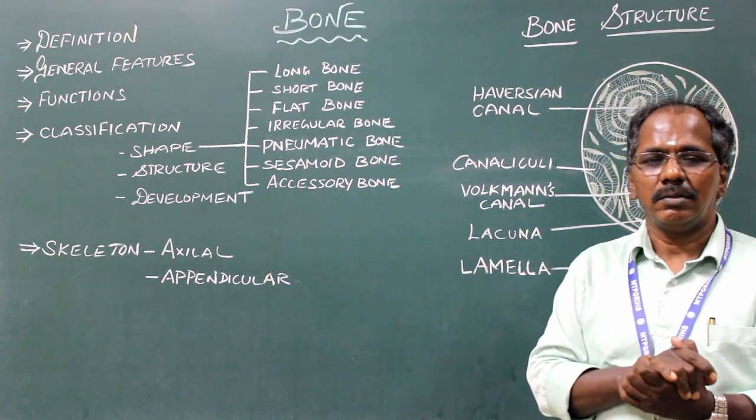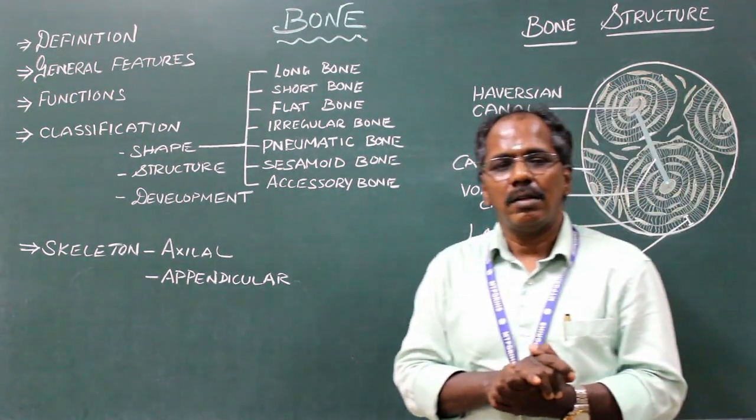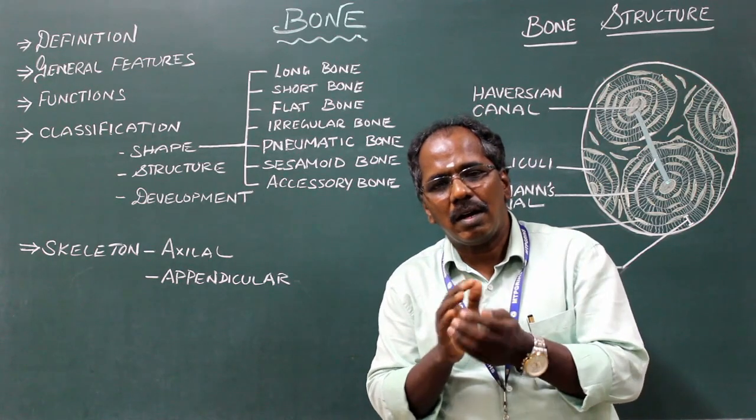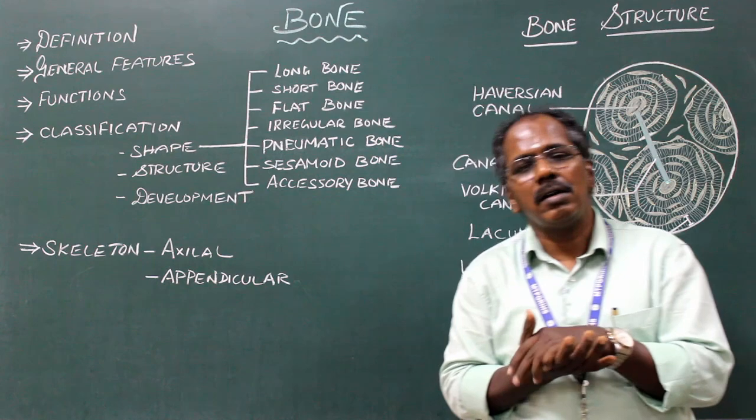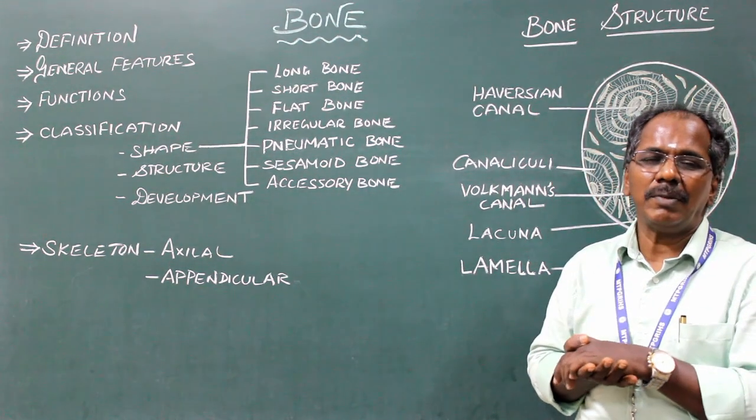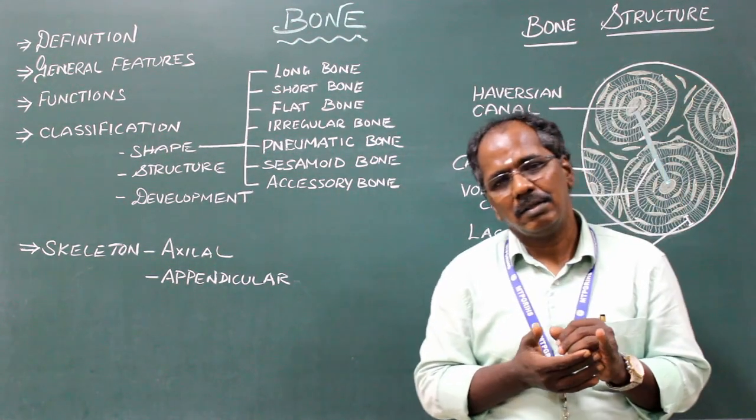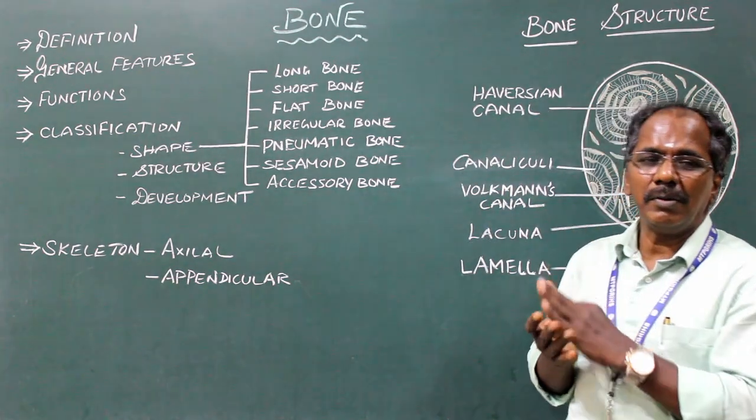Sesamoid bones are covered or enclosed by muscle, tendon, or ligaments. Examples: patella, fabella, pisiform bone.